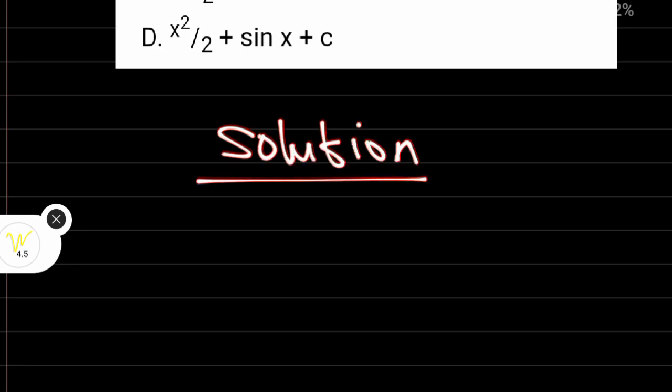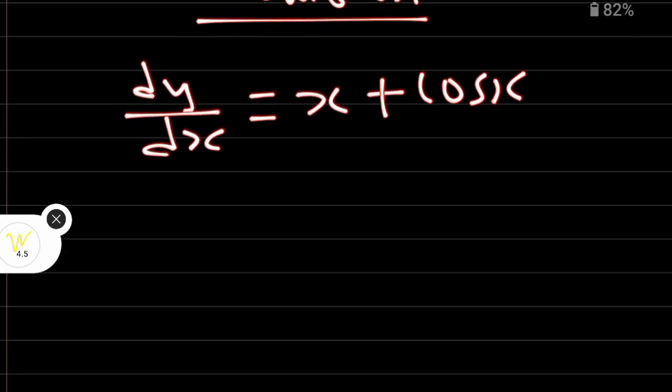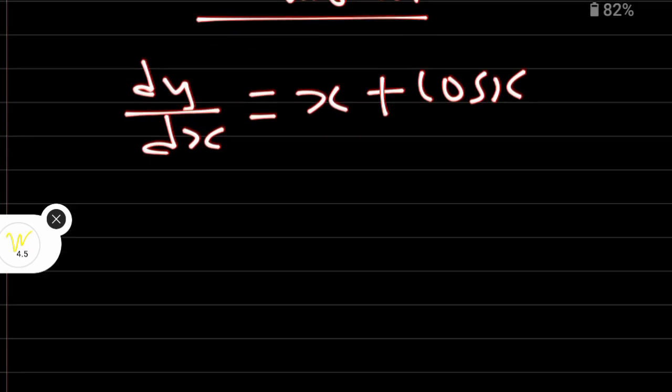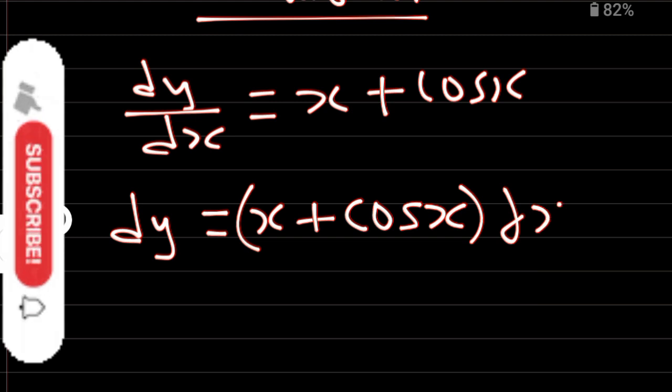Solution. dy/dx is equal to x plus cos x. We want to find y. The first thing we do, let's multiply both sides by dx. Therefore we have dy is equal to x plus cos x into dx.